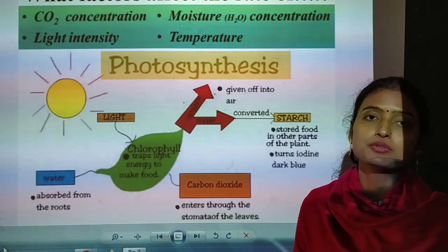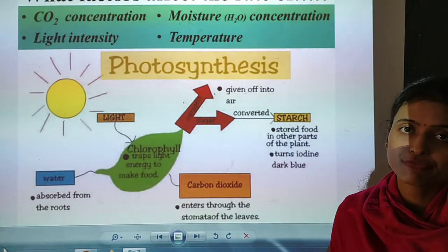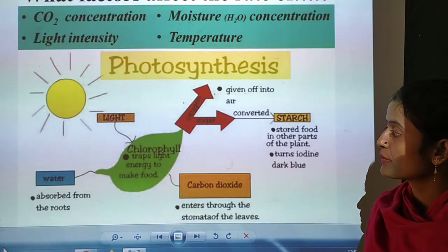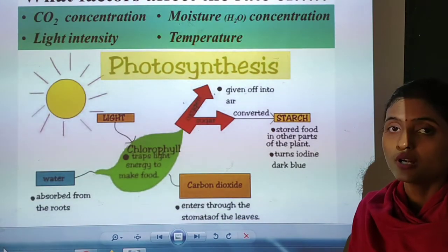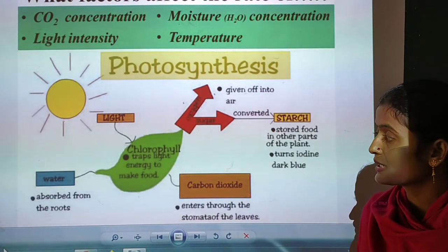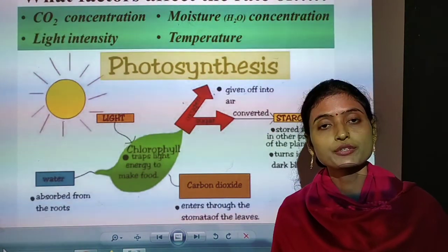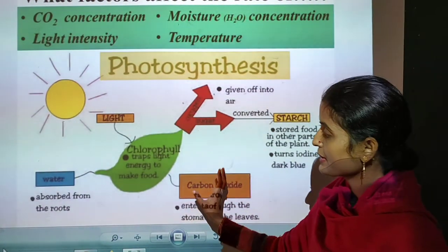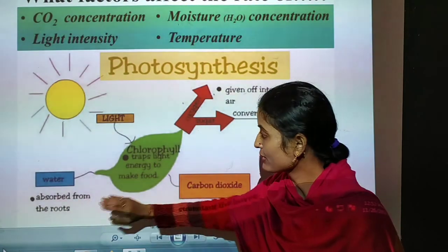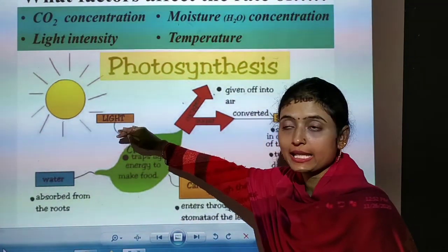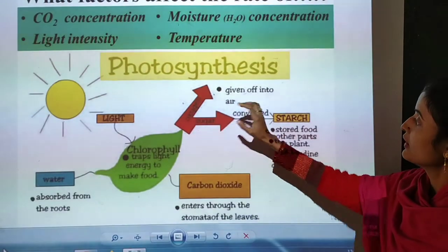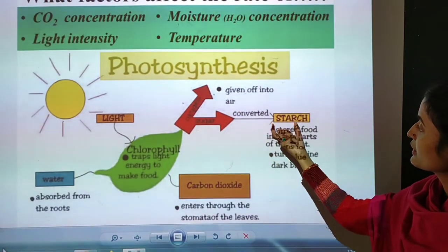And what about the nature? What about the role of chlorophyll? So chlorophyll pigment is responsible for trapping solar energy or light energy for the making of the food. So carbon dioxide plus water in the presence of chlorophyll and light, and then it will give the starch. See,